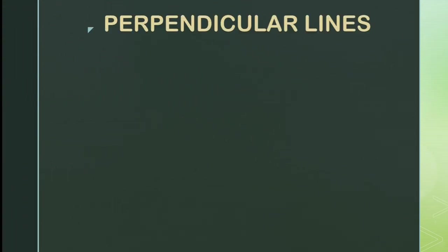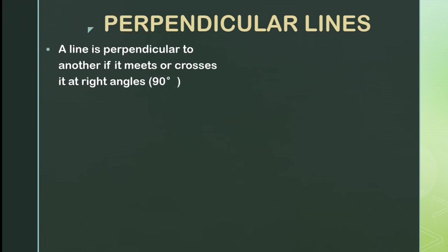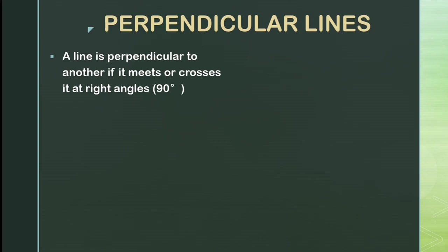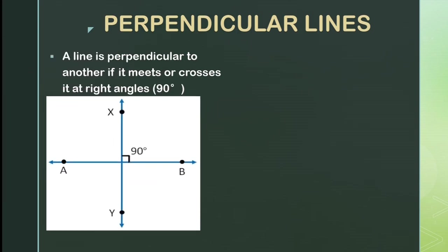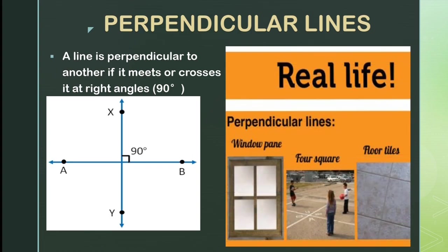Next comes perpendicular lines. A line is perpendicular to one another if it meets or crosses it at right angles, i.e. 90 degrees. As you can see in the figure, AB and CD are a pair of perpendicular lines. They intersect each other at a point where they form 90 degrees. Some real life examples: the window panes, a four-square, and floor tiles are all real life examples of perpendicular lines.